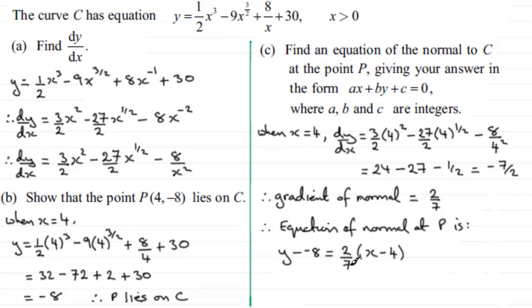To get this into standard form, multiply both sides by 7 to eliminate the fraction. This gives 7y + 56 = 2(x - 4). Expanding: 7y + 56 = 2x - 8. Rearranging: 2x - 7y - 56 - 8 = 0, so 2x - 7y - 64 = 0.